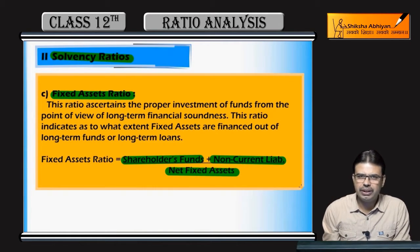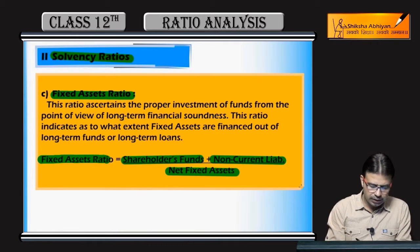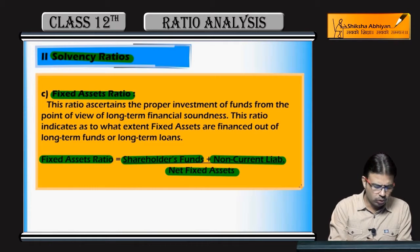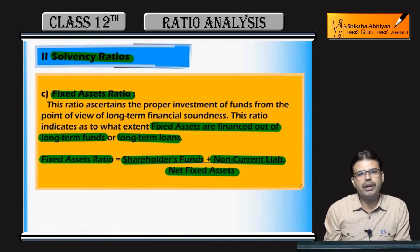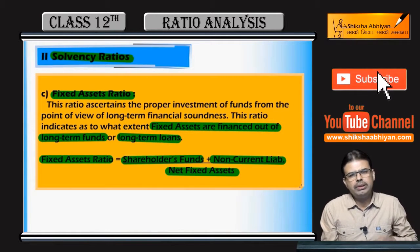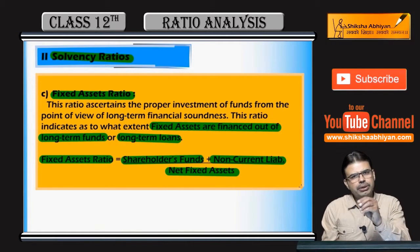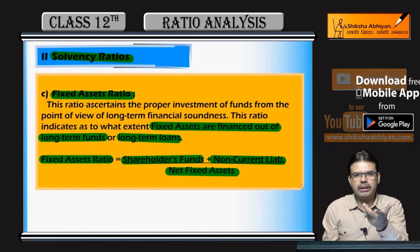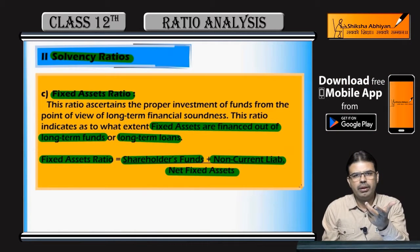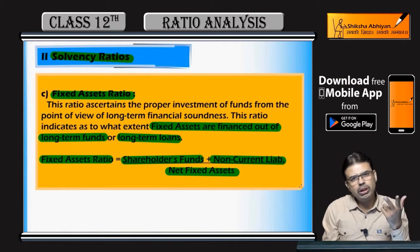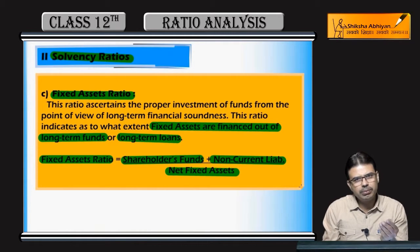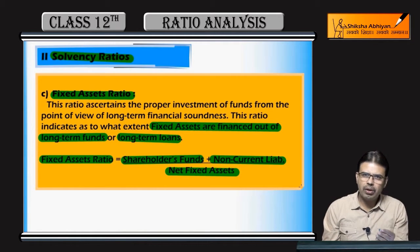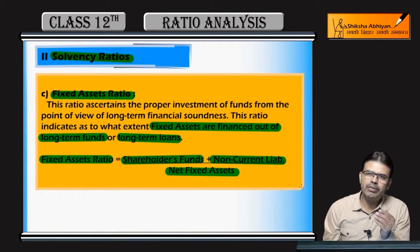Fixed Assets Ratio dikhata hai ki long-term funds ya long-term loans se kitne fixed assets kharide hain. Common sense hai — kisi bhi business mein jab fixed assets kharidte ho to paisa ya to apna hota hai ya phir long-term loan hota hai. Short-term liability lekar, creditor se paisa lekar ya bank overdraft lekar building nahi kharidte.